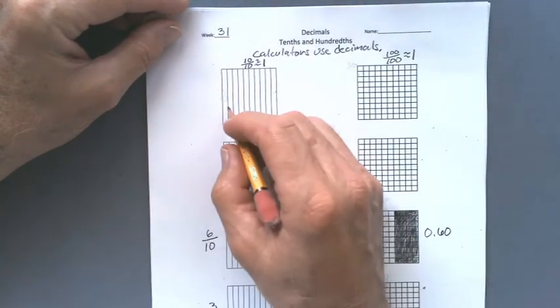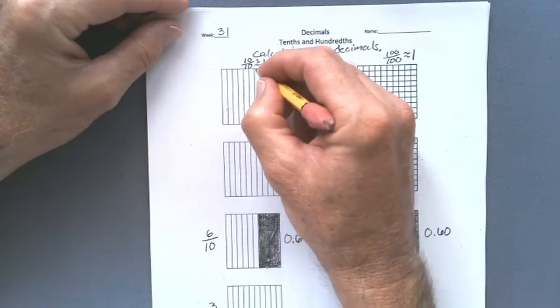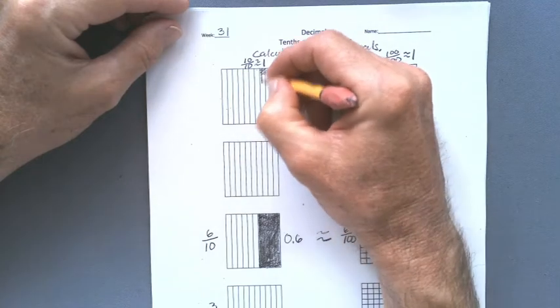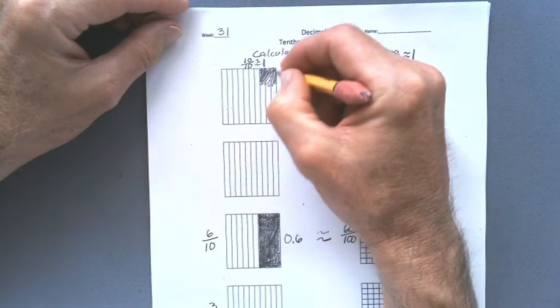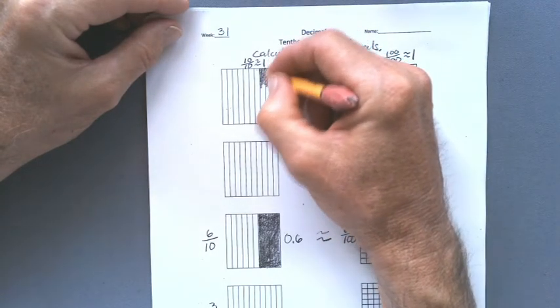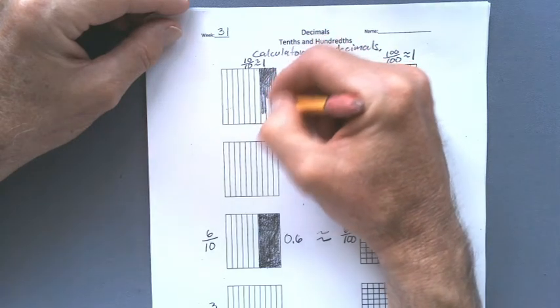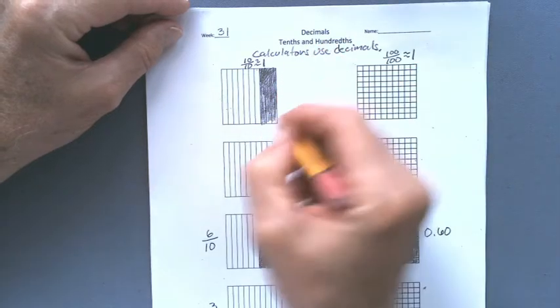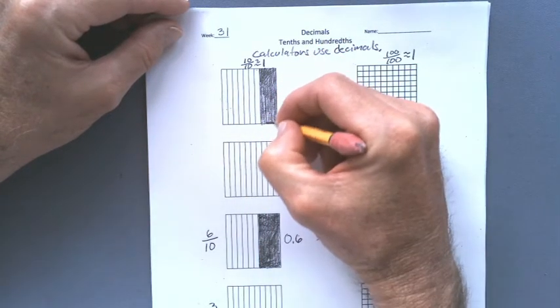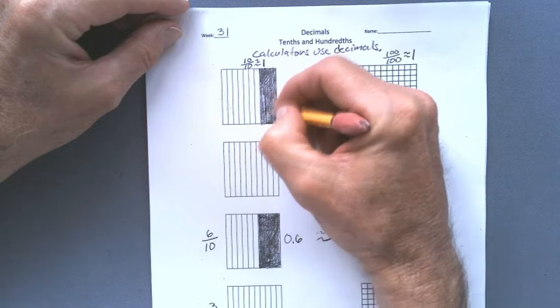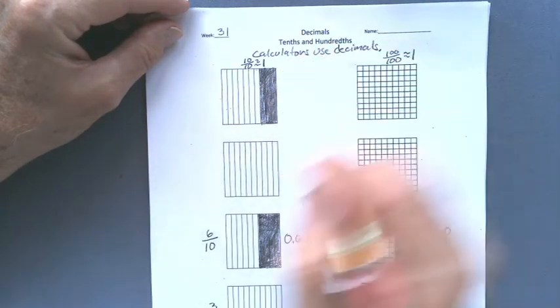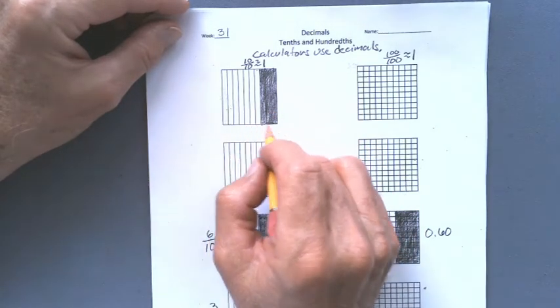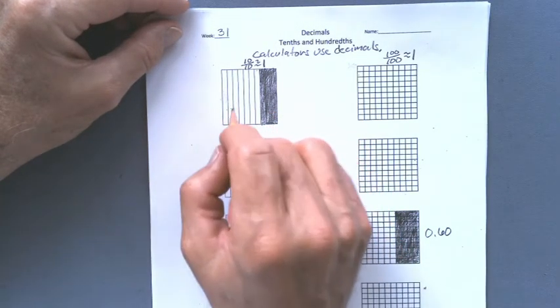I'm going to go ahead and make a model of these fractions. So let's say one, two, three, four, five, six. Let's say we save six of these. Let's say seven of them. I don't want to color that much. And we do the same thing. We're going to say okay let's remove this amount.